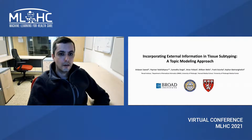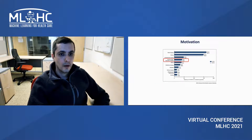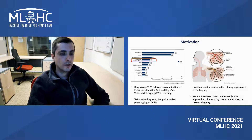Our paper is titled Incorporating External Information in Tissue Subtyping: A Topic Modeling Approach. Chronic obstructive pulmonary disease is the fourth leading cause of death in the United States, making it an important disease to understand. It is characterized by obstructive airflow and damage to tissues in the lung, and is commonly diagnosed with CT imaging.